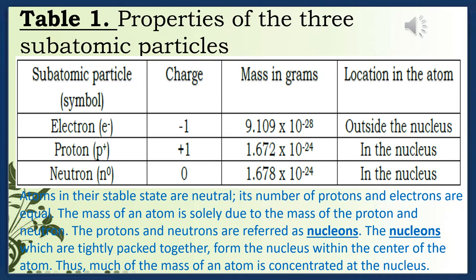Table 1 — Properties of the three subatomic particles. Electron (e⁻): charge negative 1, mass 9.109 × 10⁻²⁸ grams, located outside the nucleus. Proton (p⁺): charge positive 1, mass 1.672 × 10⁻²⁴ grams, located in the nucleus. Neutron (n⁰): charge zero, mass 1.67 × 10⁻²⁴ grams, located in the nucleus.